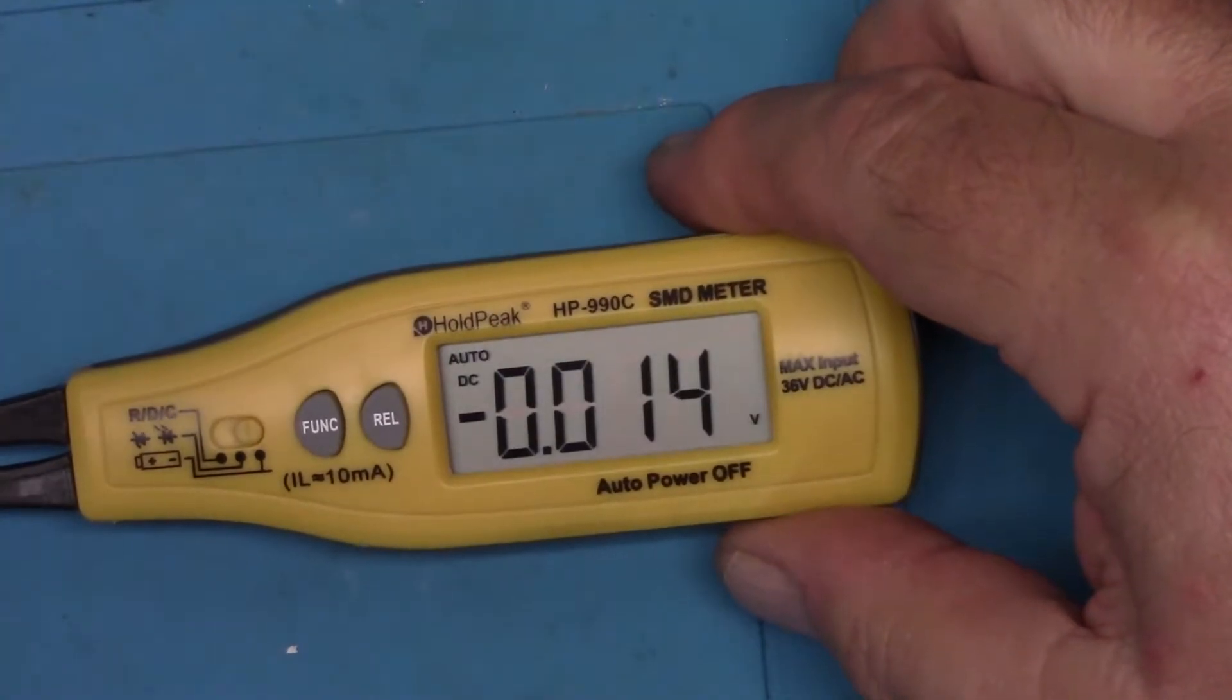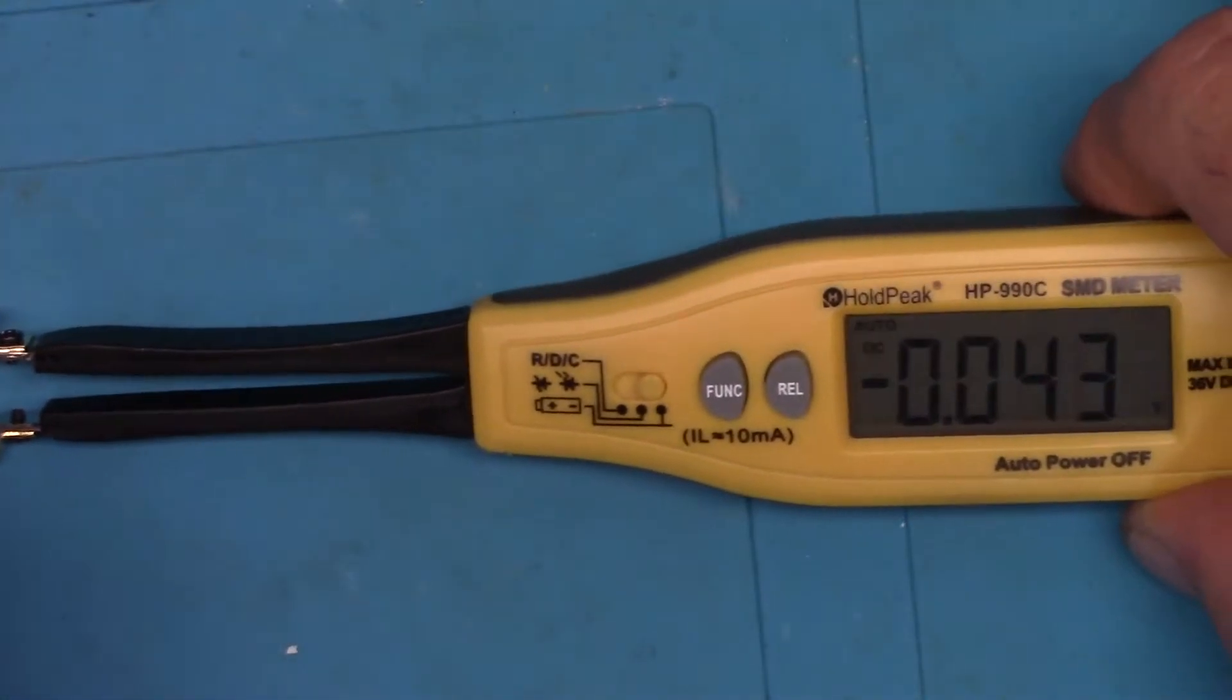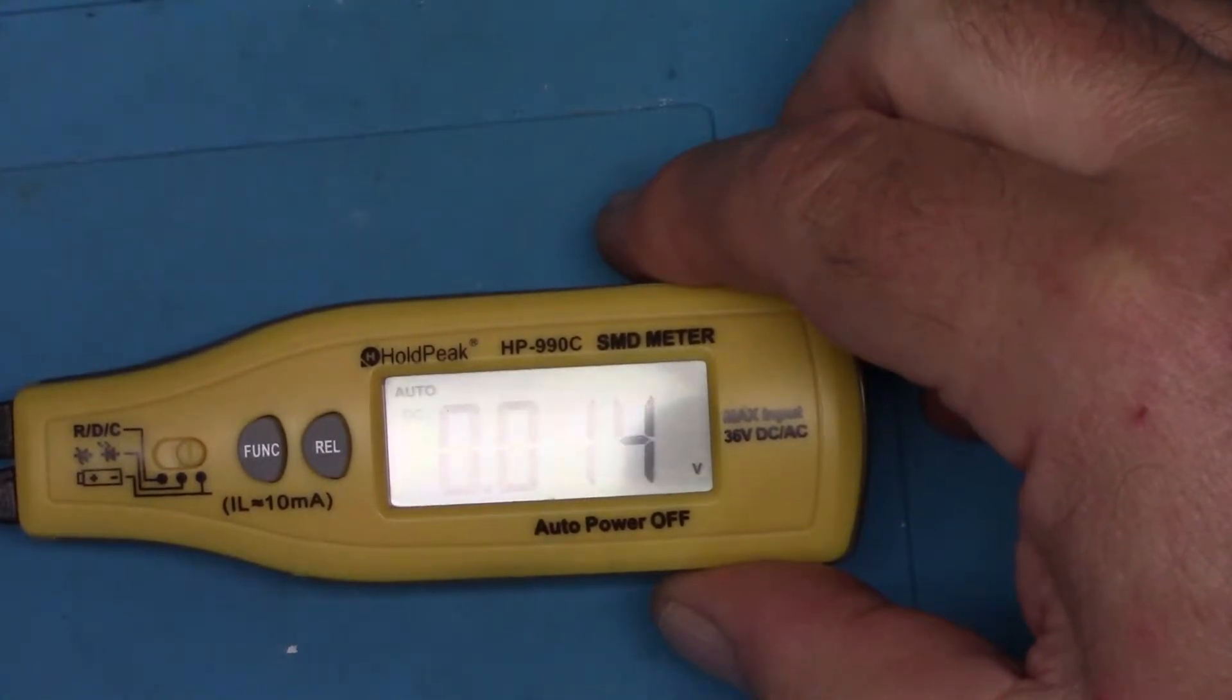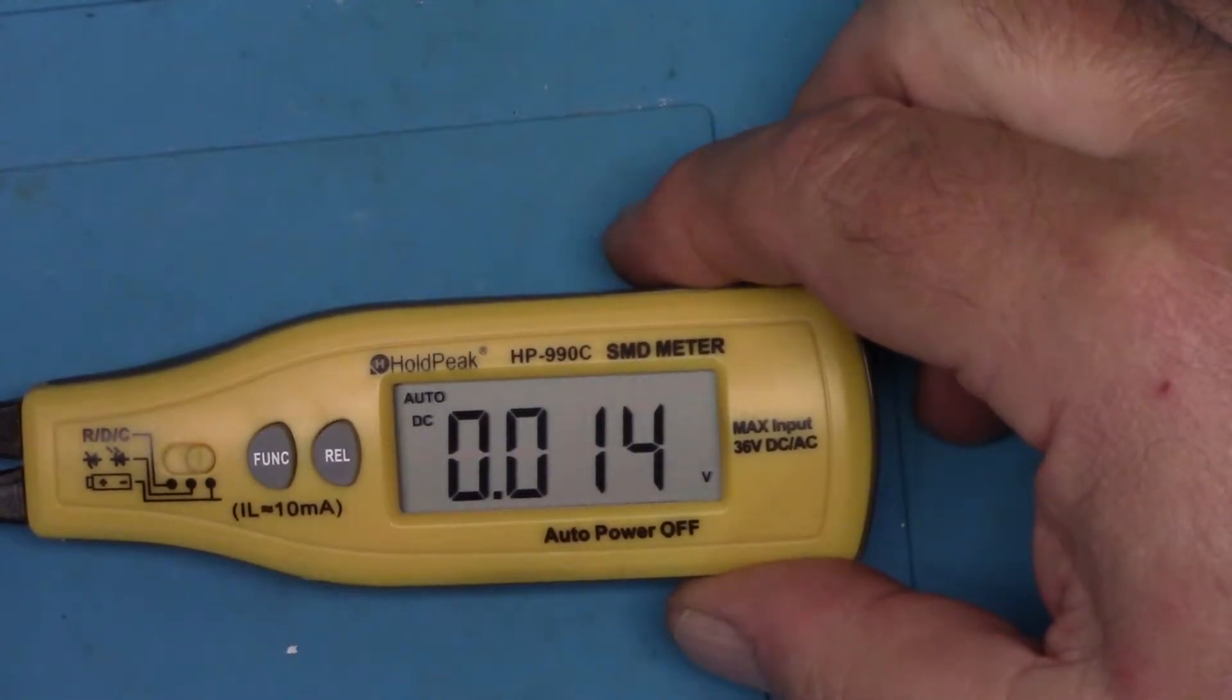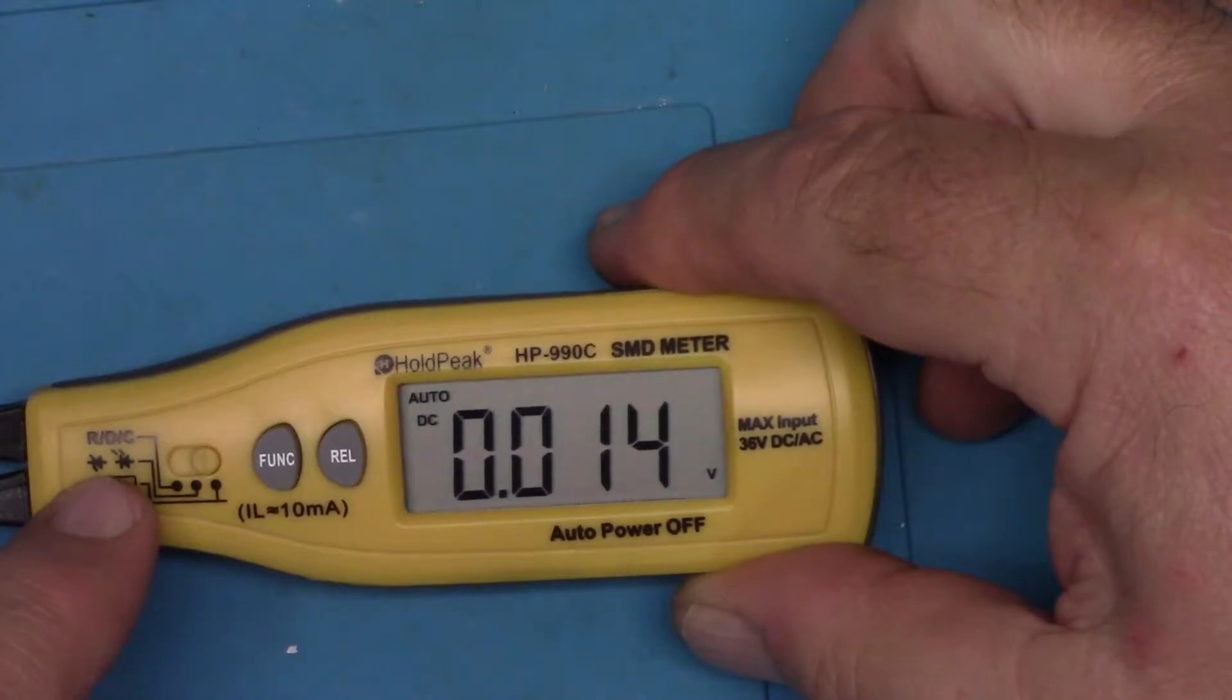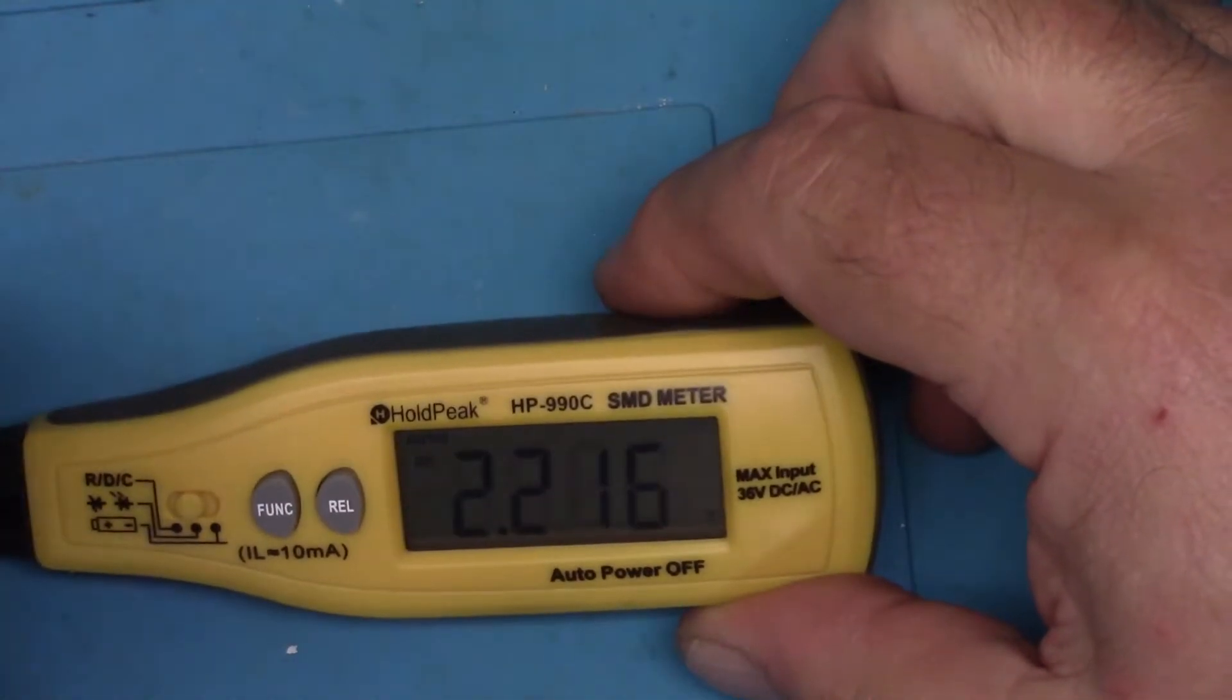This is interesting - this is reading minus 14 volts and I have 5 volts DC right now. And if I swap the leads around to the other way, minus 14 volts or positive 14 volts rather. That's interesting, that is not what I expected at all. Because according to the documentation, this is DC voltage as you can see on the little slider there. I'm all the way to the right which is the little battery indicator which is what they're using for voltage check.